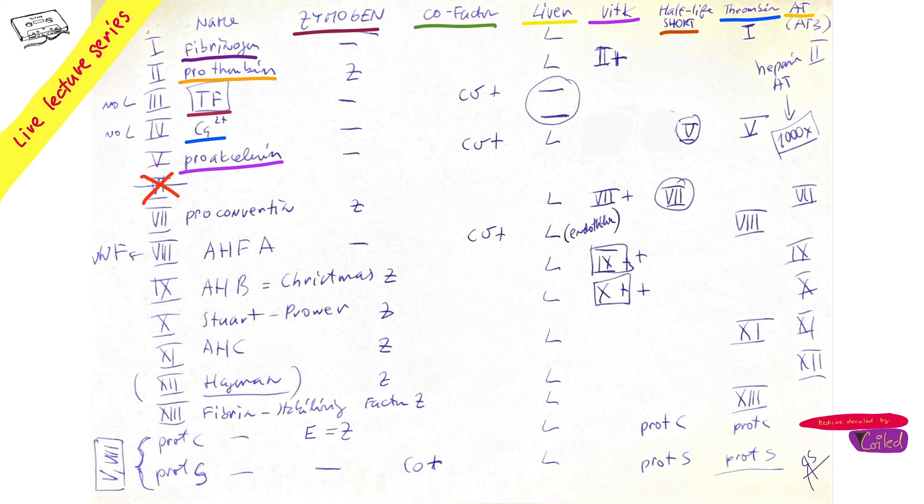Okay, so this is pro-accessory. Six, we don't have it. Seven: proconvertin. Eight, very important for you again: anti-hemophilic factor. I could put anti-hemophilic factor A. Nine is anti-hemophilic factor B, also known by the name Christmas. Ten is Stuart-Prower.